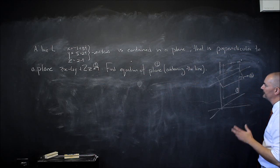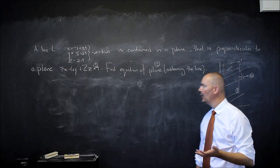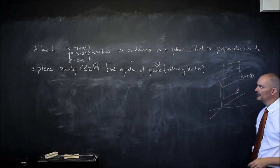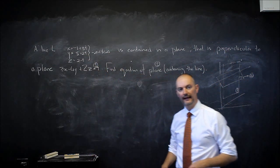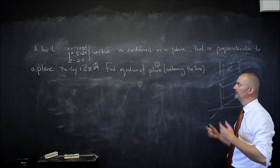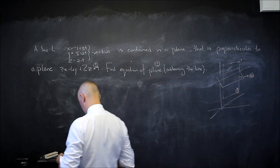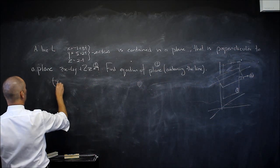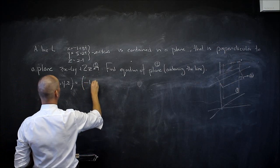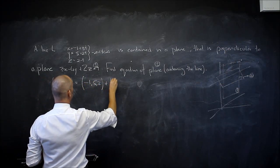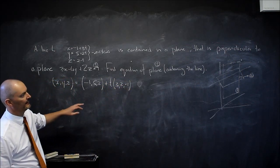How do we get the first vector, the one parallel to the line? One way is to get two points on the line by setting t equals 0 and t equals 1, giving two (x, y, z) values, then subtracting to form a vector. Or I can write the line in vector notation: (x, y, z) equals (negative 1, 5, 2) plus t(3, 2, negative 1).